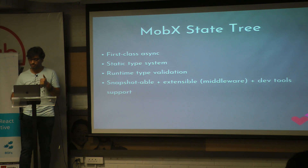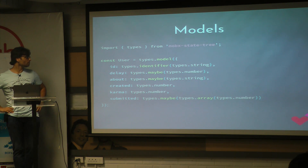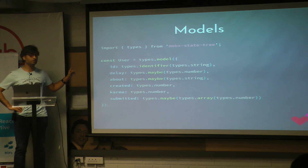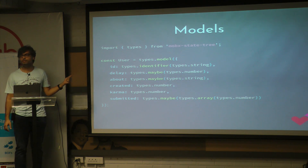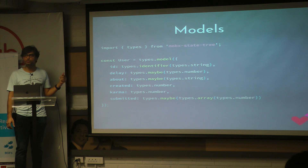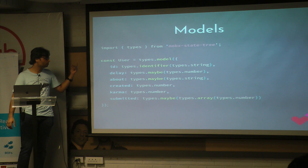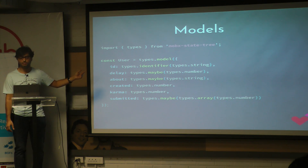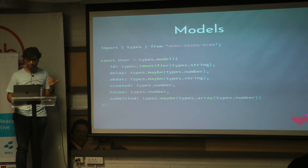It also has snapshots, which I'll show you. Here is an example of a model based on a user object. You can specify the type of properties on the model. So let's say the ID is the identifier — it's just a string. And 'created' is a number. 'Submitted' is an array of numbers but it is optional, so it may not be present when you're inspecting this model.